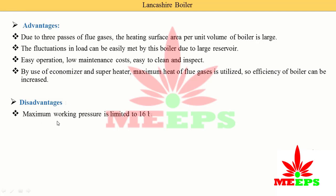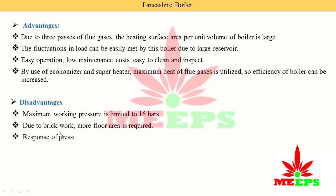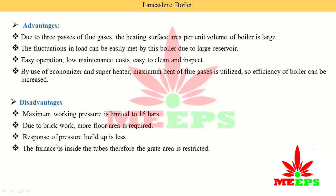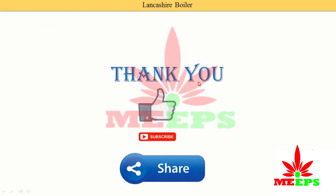Disadvantages of the Lancashire boiler: the maximum working pressure is limited to 16 bar. Due to the brick work, more floor area is required. Response for pressure build-up is slow — more time is required to achieve 16 bar pressure. The furnace is inside the tubes, which restricts the grate area, limiting the combustion area for fuel. This limited furnace area also contributes to the longer time needed to build up pressure. Thank you for watching — please like the video, subscribe, and share with your friends.